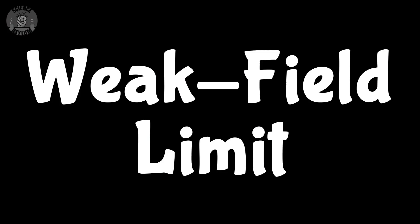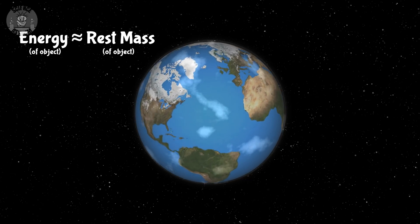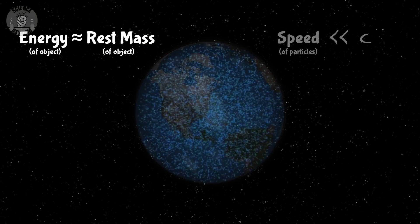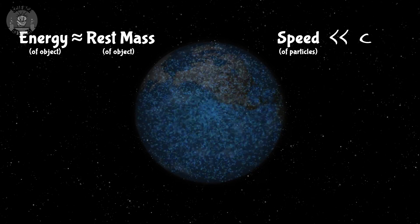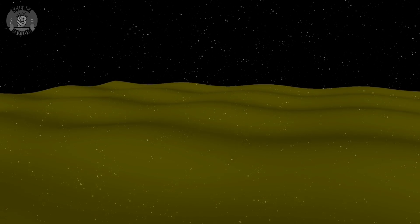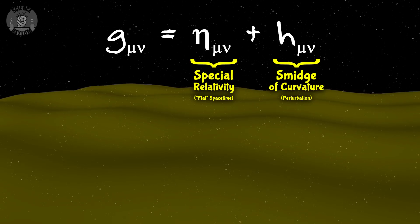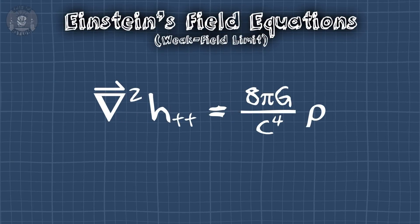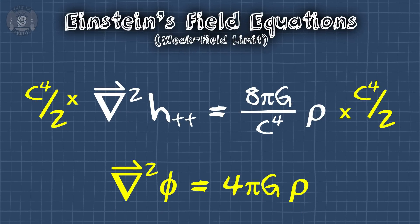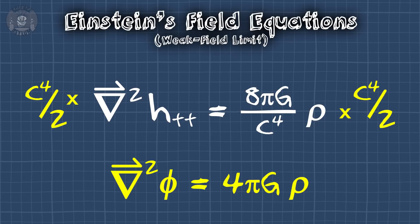We call it the weak field limit, in which we make two assumptions. One: the cause of the curvature is an object made of matter and the particles in that object are moving slow compared to light. Two: the curvature is very close to zero — it's pretty much just the spacetime from special relativity plus a smidge of curvature. Both of these assumptions are perfectly reasonable around something like the Earth where we'd expect Newton's law of gravity to apply. In the weak field limit, Einstein's equation looks like this, which is only a constant factor away from Poisson's equation — it's the same equation, at least in the weak field limit.